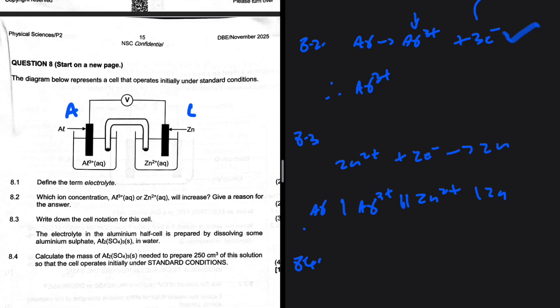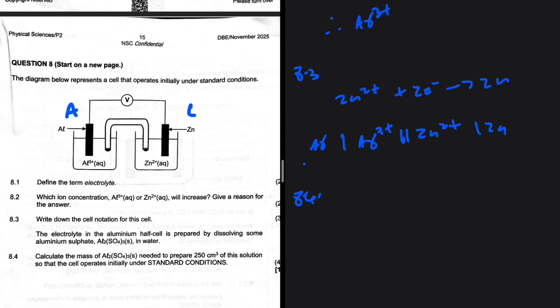This is the mistake that most people are going to do. So we are looking for the mass of that compound needed to prepare 250 cm³ of this solution so that the cell operates initially under standard condition. So the standard condition of interest is that the concentration is 1 mole per decimeter cubed.